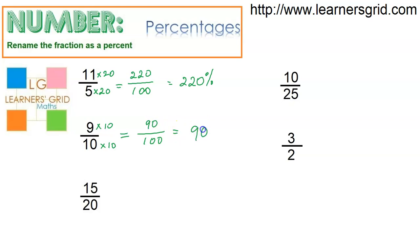Let's have a look here. Remember I need a denominator of 100, so 100 divided by 20 is 5, so multiply 20 by 5, multiply 15 by 5. So 15 by 5 is 75, and that means it's 75 percent.